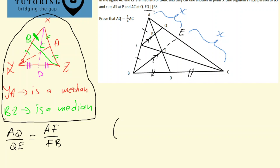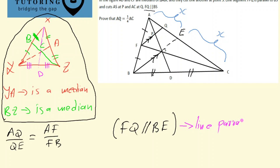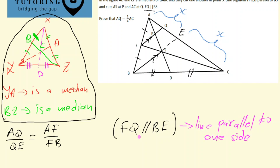The reason here is the proportionality theorem. If you don't know what the proportion theorem is, search our videos or visit your notes. I'm going to write the reason as: FQ is parallel to BE, or you can say BS. Another reason you can give is 'line parallel to one side' — you put it in brackets depending on what you prefer.